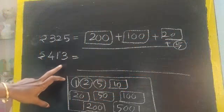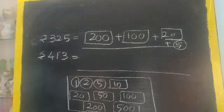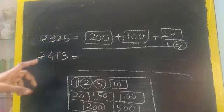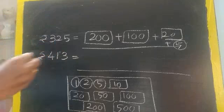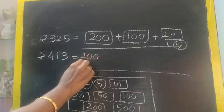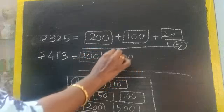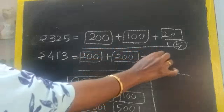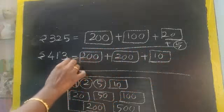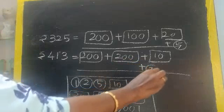Now 400 plus 10 plus 3. Do we have 400 rupee note? No. So what we can do? Yes, we can write as 2 plus 2, right? So 200 plus 200 plus 10 rupee note. But 3 rupee we don't have. So 2 plus 1.